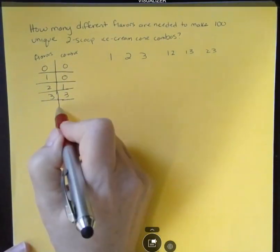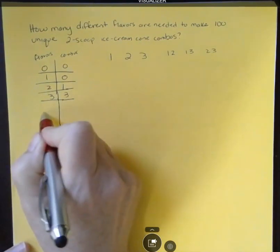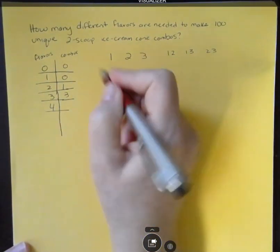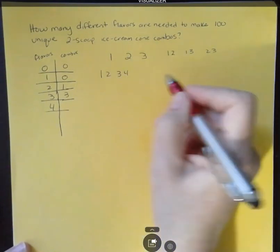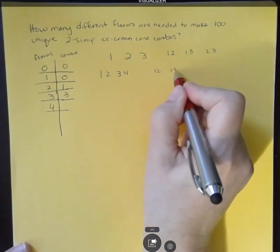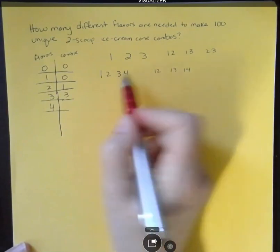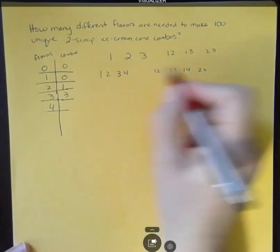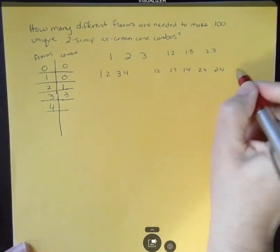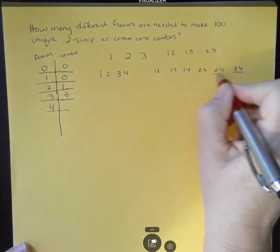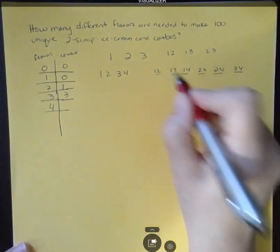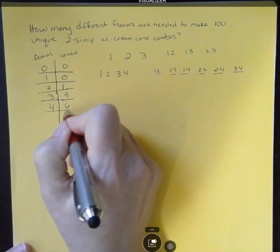I don't really see a pattern here that's going to help me, so I'm going to go on to four. What if I had four? If I had one, two, three, and four. I could do one and two, one and three, one and four, two and three, two and four, or three and four. That's one, two, three, four, five, six different ways that I could do that.